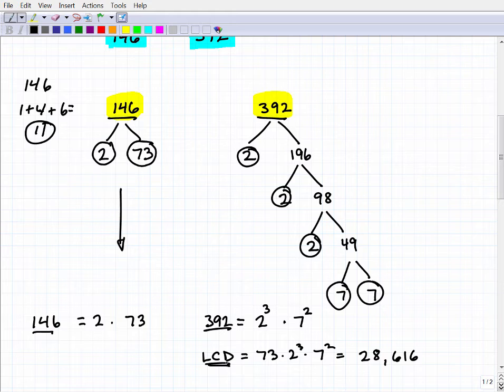So how do you find the LCD now? First step: you prime factor each of these denominators. Then we're gonna look at the respective powers. Here I have 2 by itself, which is really 2 to the first. I've got 2 to the first and 2 cubed. The rule with the LCD is that you take the highest power of that number. Because 2 cubed is a higher power of 2 than 2 to the first, we're going to take the 2 cubed and put it in our LCD.